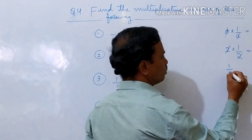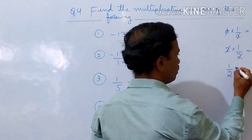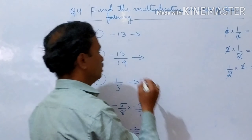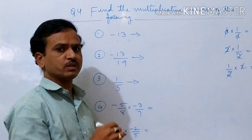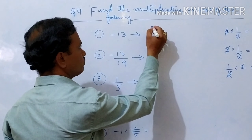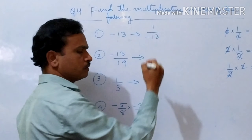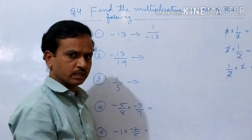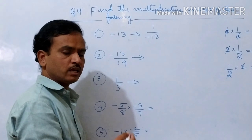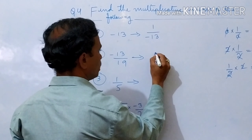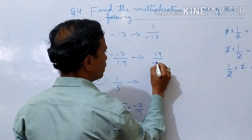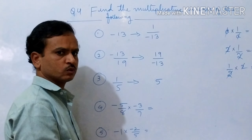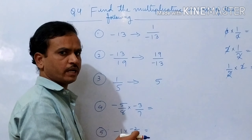Now 1 by 2: the multiplicative inverse of 1 by 2 is 2, since 1 by 2 times 2 equals 1. Now the question minus 13: the multiplicative inverse of minus 13 is 1 divided by minus 13; multiplying them cancels to give 1, the multiplicative identity. Now minus 13 by 19: reverse it to get 19 divided by minus 13. Then 1 by 5: the reciprocal is 5.